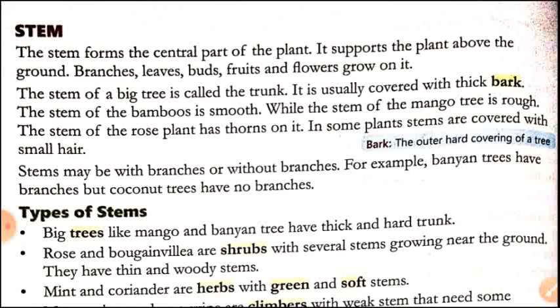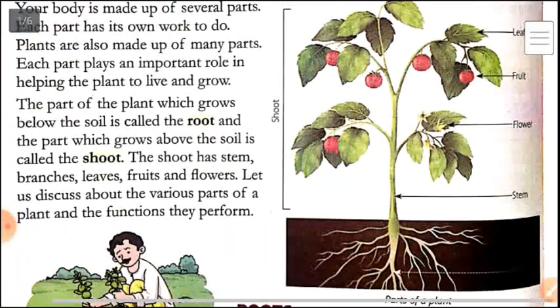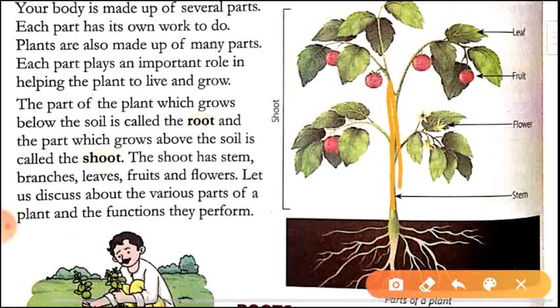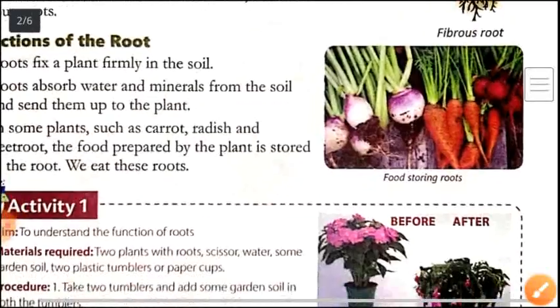So stem is the central part of the plant, as you can see here in the picture also. You can see it is the central part of the plant and it is supporting all other parts of the shoot system like leaves, fruits, flowers and branches. So whatever parts are there above the ground, they are all supported by the stem.